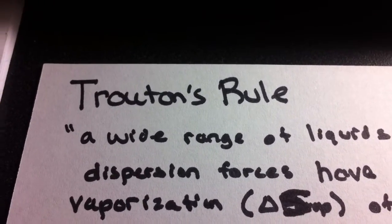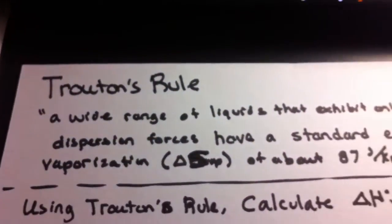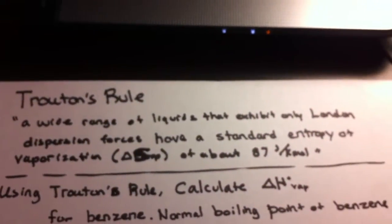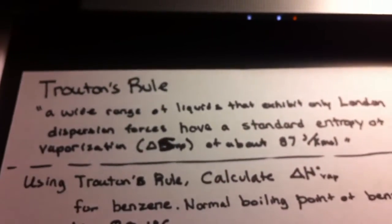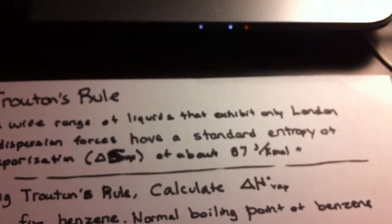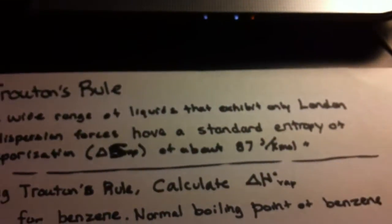Let's talk about Troughton's rule. Troughton's rule is pretty simple. It basically states that a wide range of liquids that exhibit only London dispersion forces have a standard entropy of vaporization, delta S, of about 87 joules per Kelvin mole.